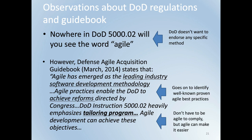The remaining webinar topics focus on how we can address this challenge. First, we will look at some observations about the DOD regulations and guidebook — similar observations can be made in other regulated industries. Second, I will explain what seems to be missing. Third, I will share tips and pitfalls to help you locate your right level of being agile in a regulated or constrained environment. Notably, nowhere in 5000.02 will you see the word 'agile,' because the DOD doesn't want to endorse or dictate a specific method. However, the Defense Agile Acquisition Guidebook states that agile has emerged as the leading industry software development methodology and that agile practices enable the DOD to achieve reforms directed by Congress. DOD instruction 5000.02 heavily emphasizes tailoring.